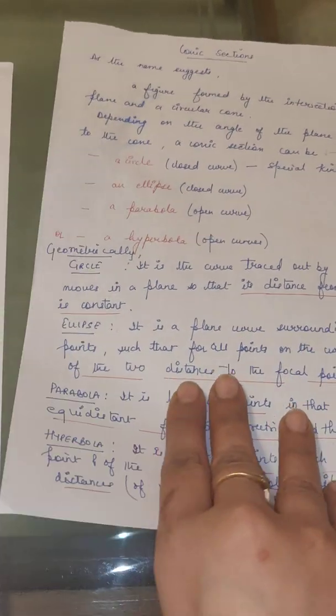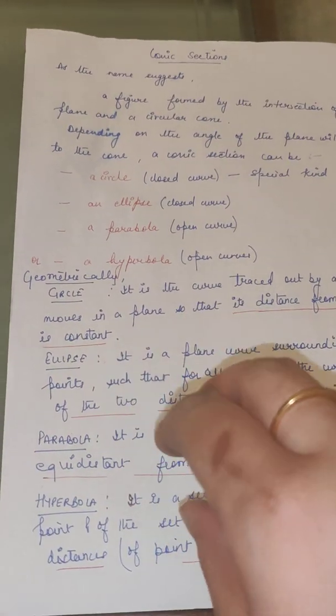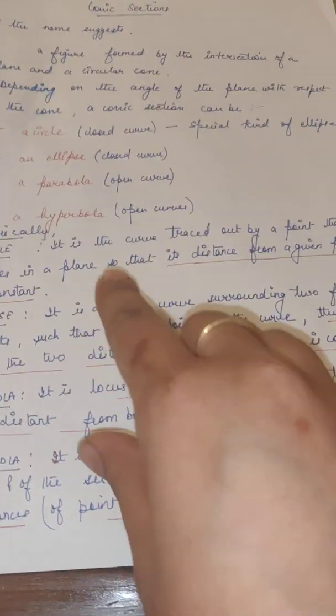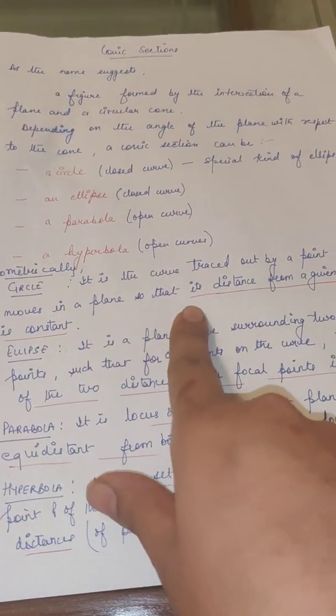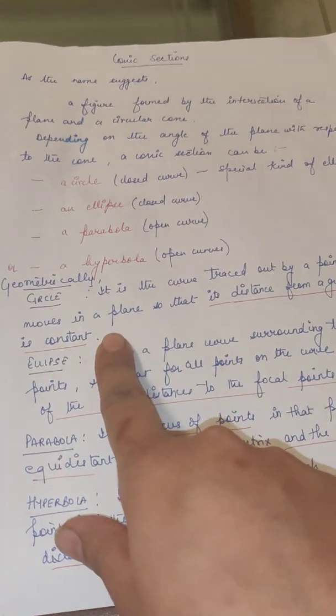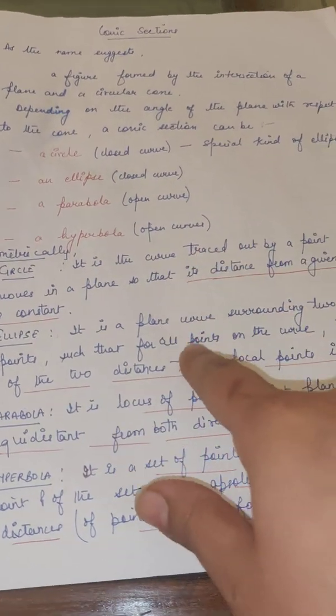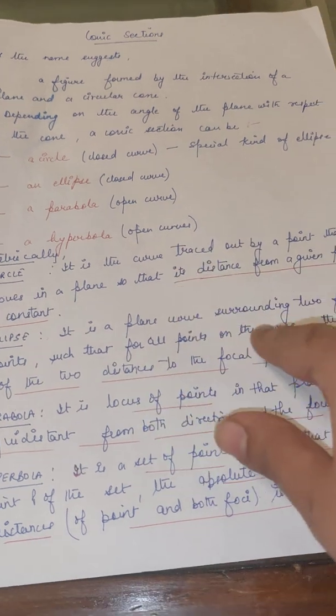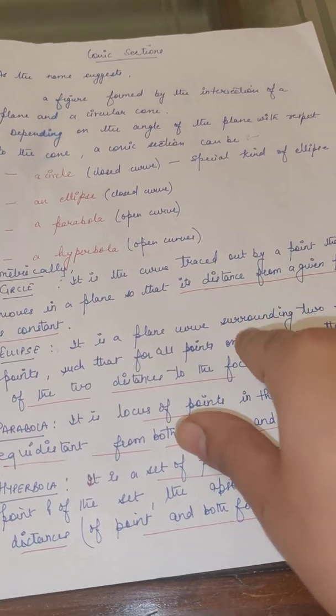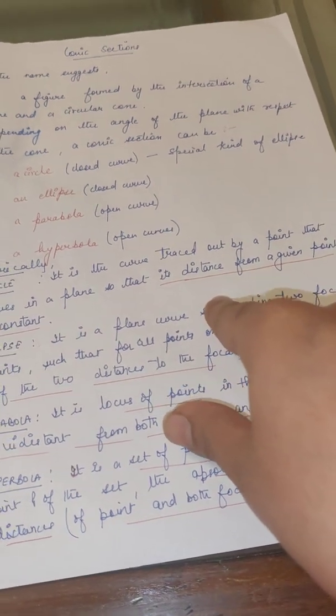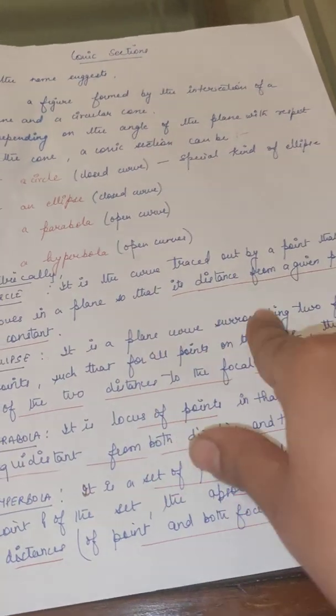First, we will move one by one. First, let's take a circle. Circle is a curve traced out by a point that moves in a plane so that the distance from a given point is constant. As you all know, a circle is a curve traced out by a point that moves in a plane so that distance from a given fixed point is constant to all the points.